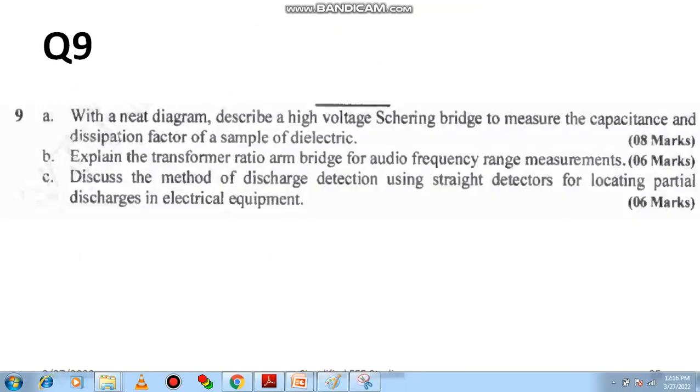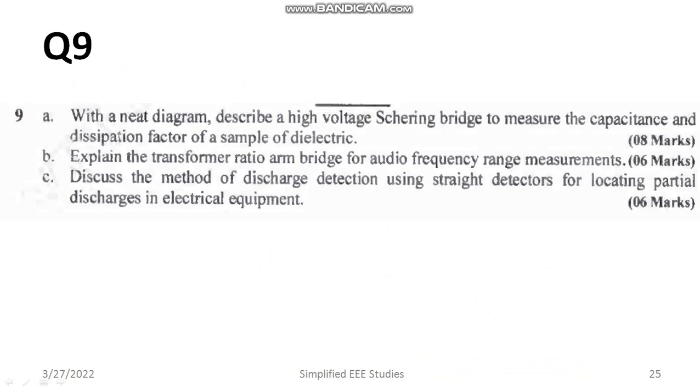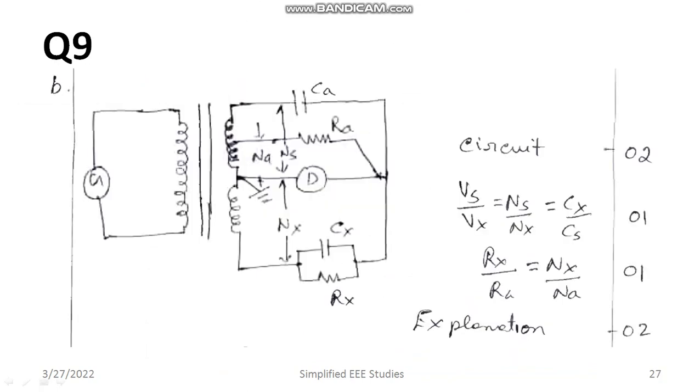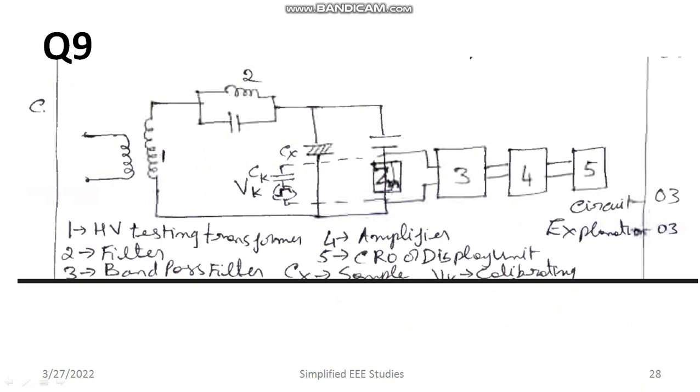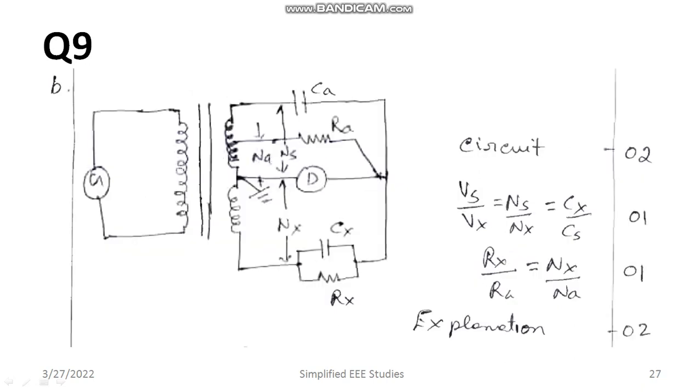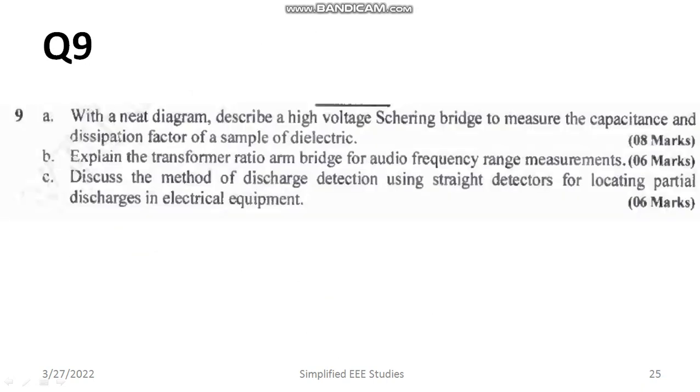Another one: discuss the method of discharge detection by using straight detectors. In that also you are supposed to draw the diagram. Straight detectors. What is three, four, five, everything you have to explain. Diagram three marks, explanation three marks, total six marks question. You can grab six marks completely.